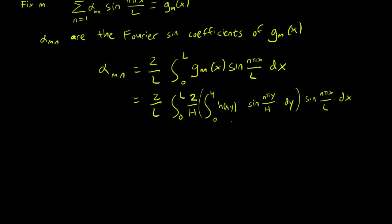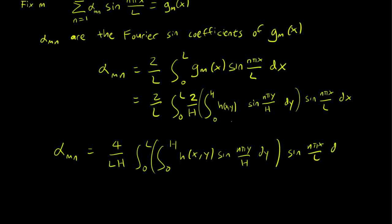And to simplify a little bit, we now have alpha_mn equals, we can take the constants 2 over L and 2 over H out, we get 4 over LH integral from 0 to L and 0 to H. h(x,y) sine(m pi y over H) dy sine(n pi x over L) dx. And this will be our formula for the coefficients of the double Fourier sine series.